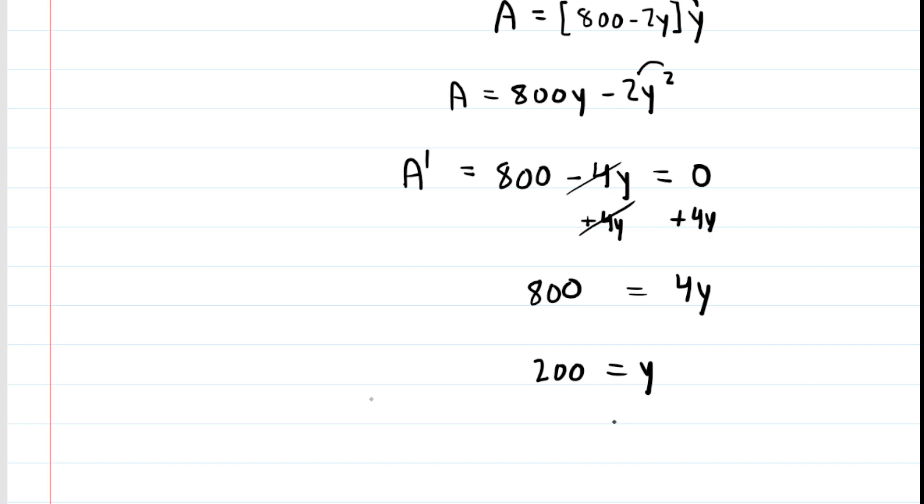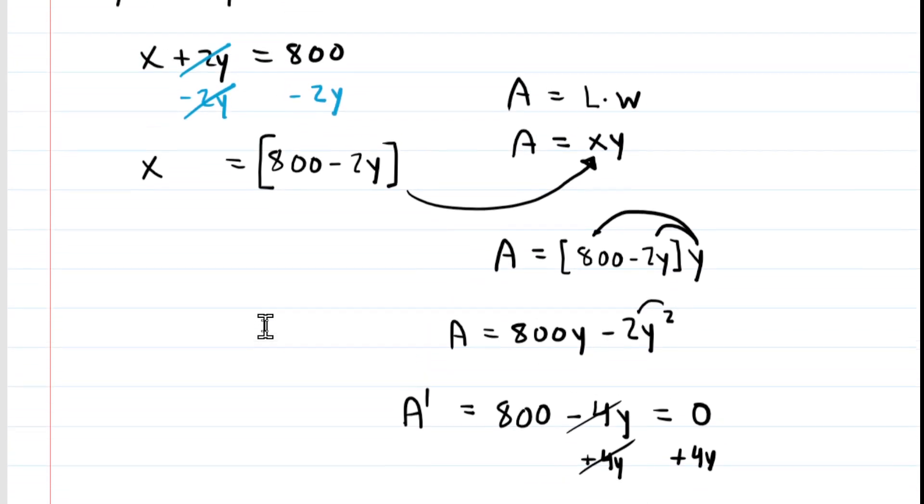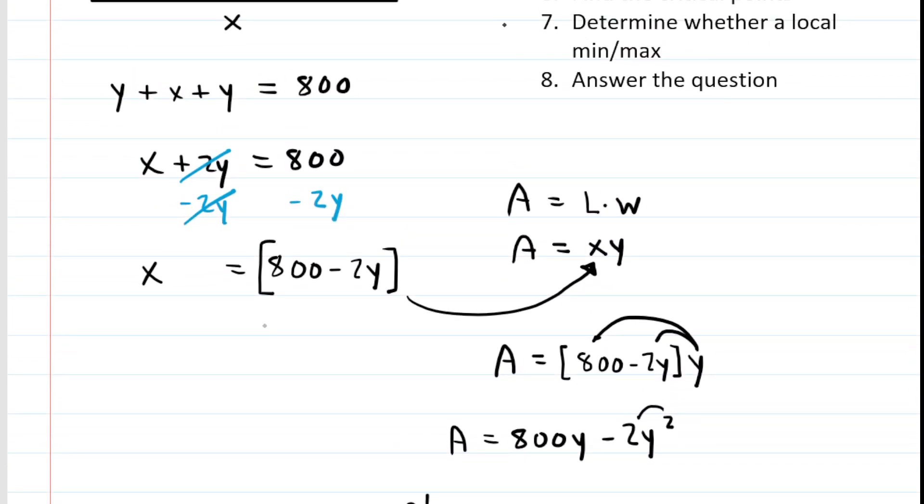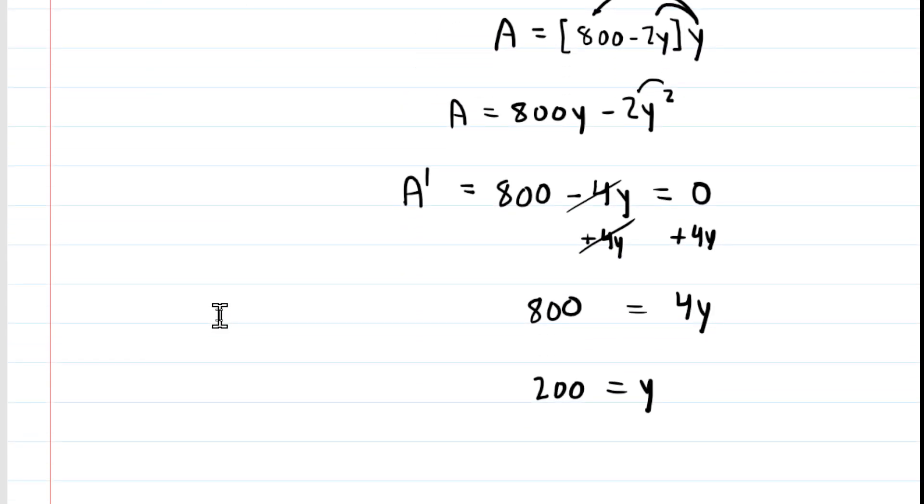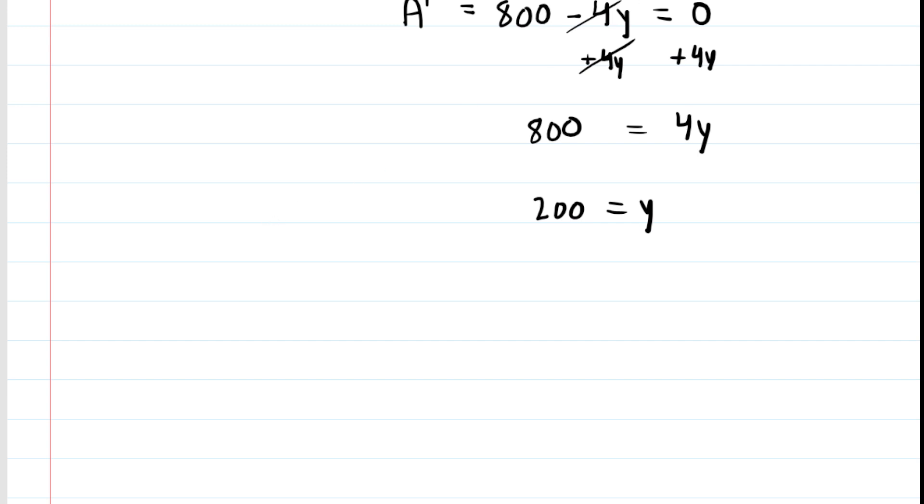That is step 7: determine whether we have a local minimum or a local maximum. This typically involves the first derivative test. To do the first derivative test, we'll draw a number line. On that number line, we plot our value of y, which was 200. This is the critical point. Then we're going to select values near the critical point. We could use 199 on one side and 201 on the other side of the critical point. We plug these into the derivative.